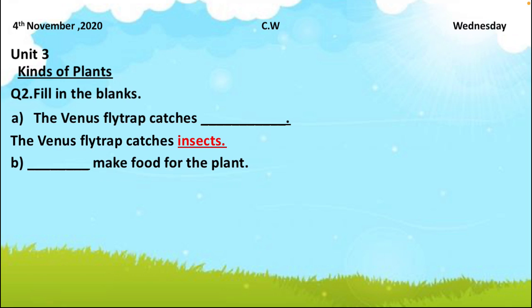Statement B: blank make food for the plant. Which part of the plant makes food — root? No. Stem? No. Leaves? Yes, because leaves have chlorophyll inside them, and in the presence of sunlight they make food for the plant. So the answer is: leaves make food for the plant.